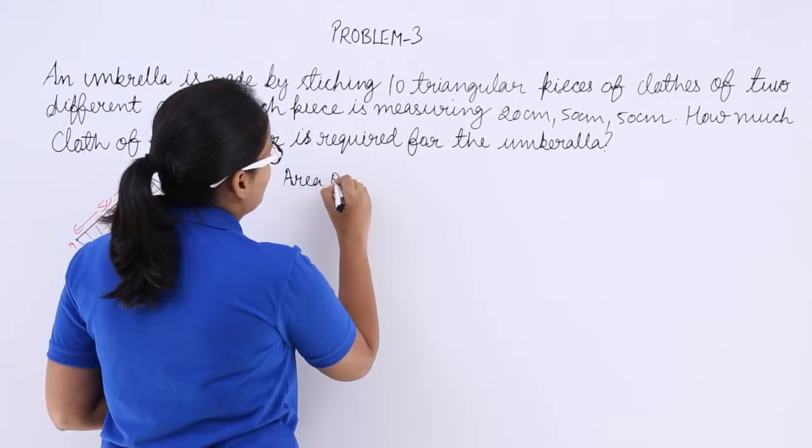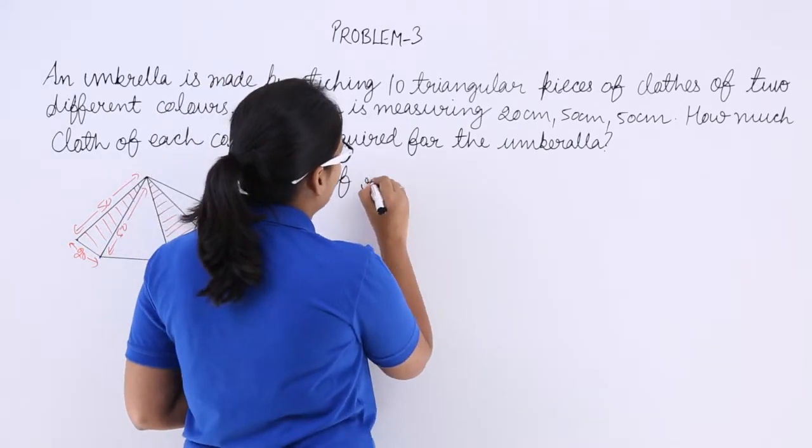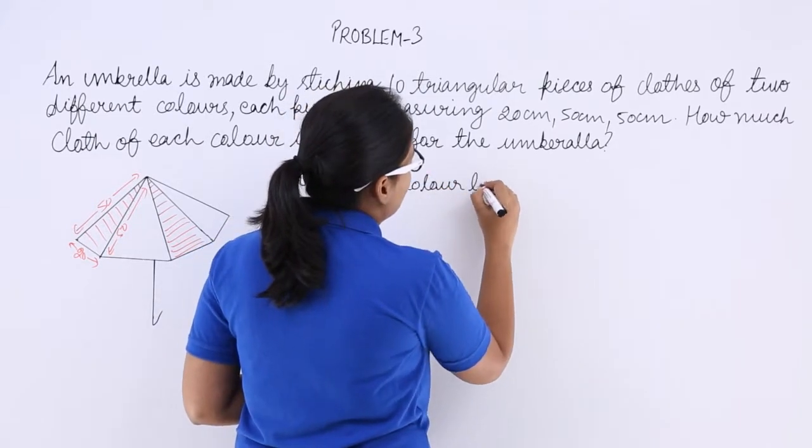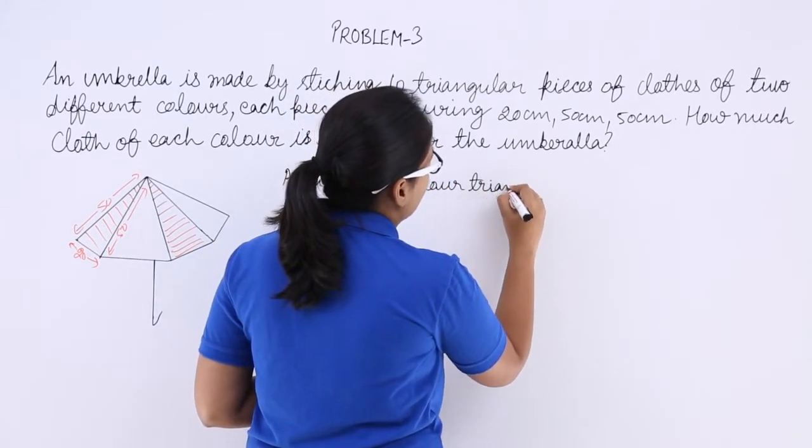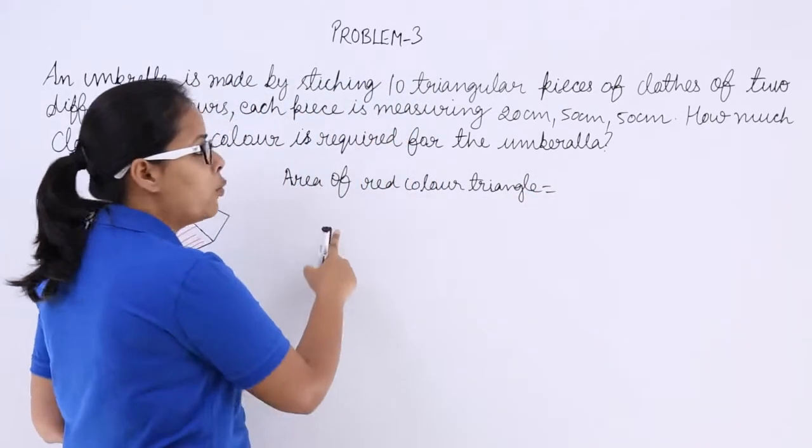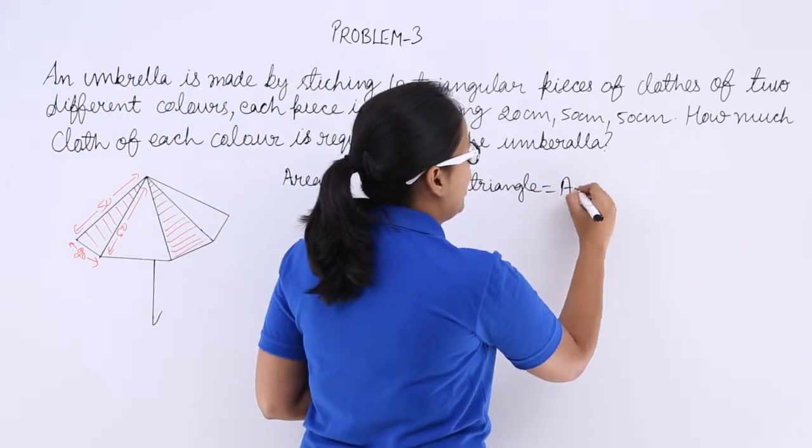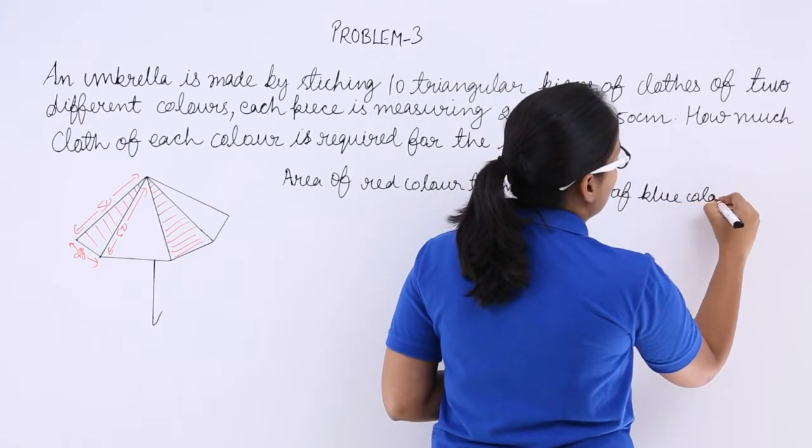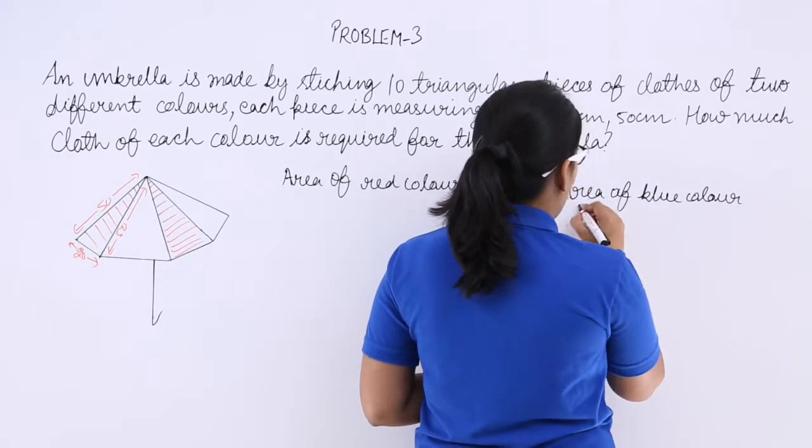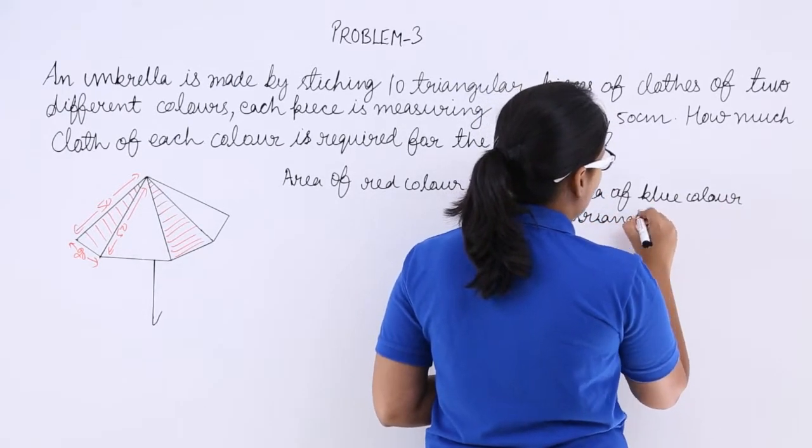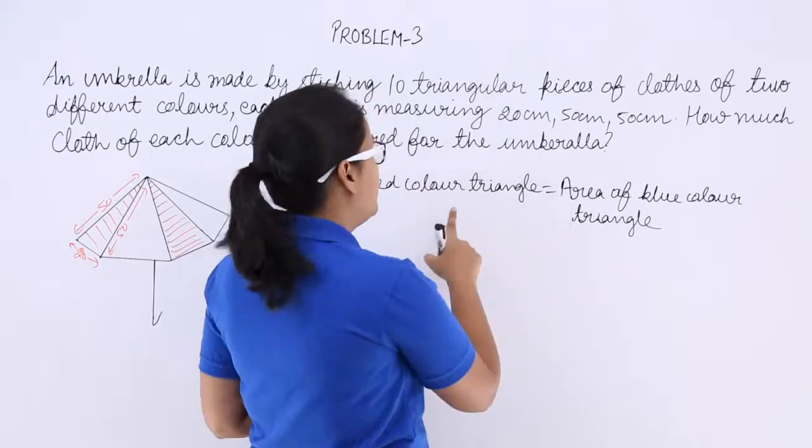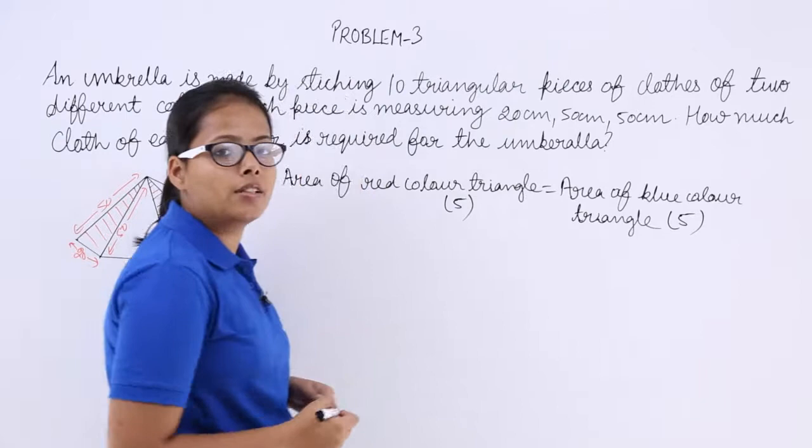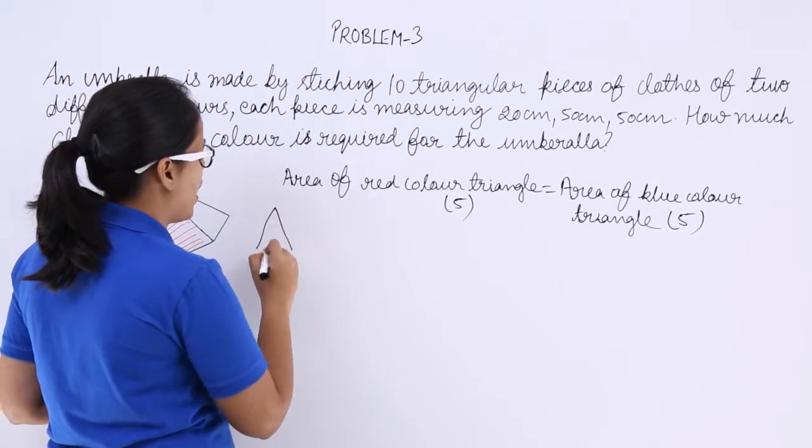Area of red color triangle is equal to area of blue color triangle, and you know that there are 5 red and 5 blue color triangles. So now let's calculate, let's take one triangle.